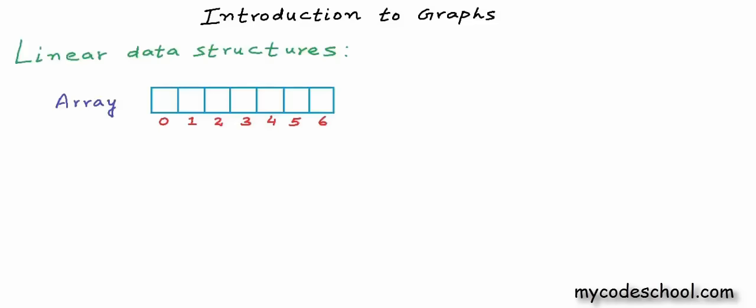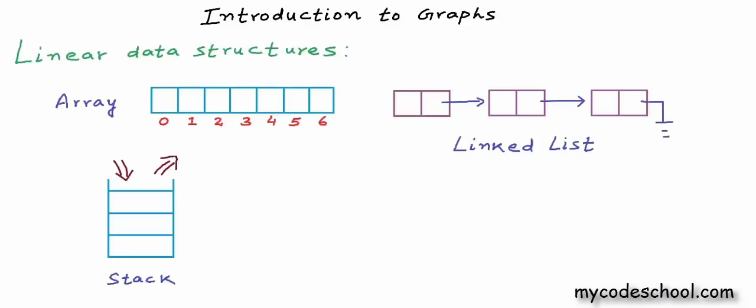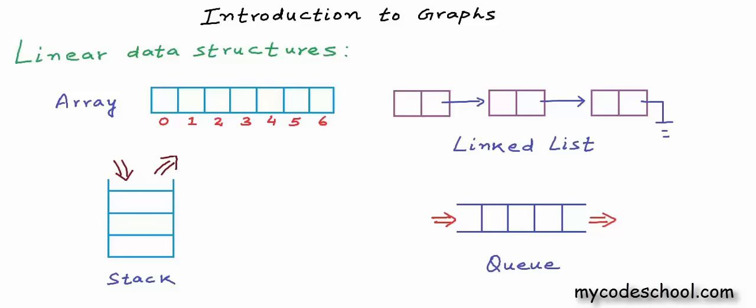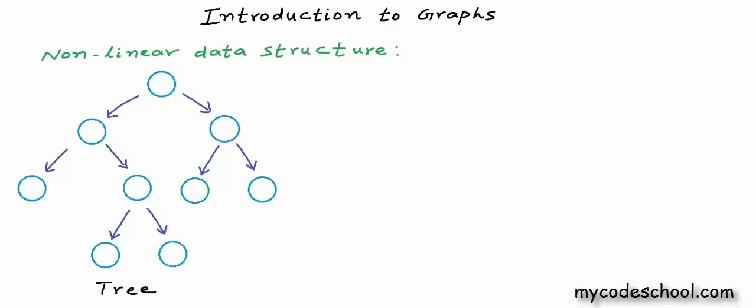Hello everyone. So far in this series on data structures, we have talked about some of the linear data structures like array, linked list, stack and queue. In all these structures, data is arranged in a linear or sequential manner, so we can call them linear data structures. We have also talked about tree, which is a non-linear data structure.